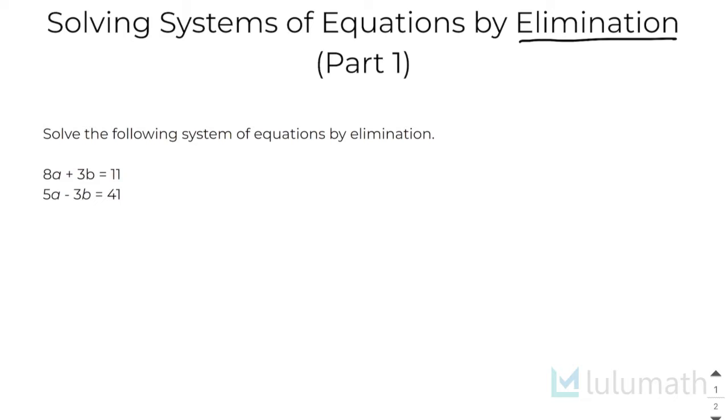The reason why this method is called elimination is because you are literally eliminating a variable. Remember, when we have an equation with two variables here, we are trying to go down to one variable so that we can actually solve our equation easily. So 8a plus 3b equals 11 has two variables. 5a minus 3b equals 41 has two variables as well. We're going to eliminate one of our variables, get down to one variable, and now we can solve it more easily.